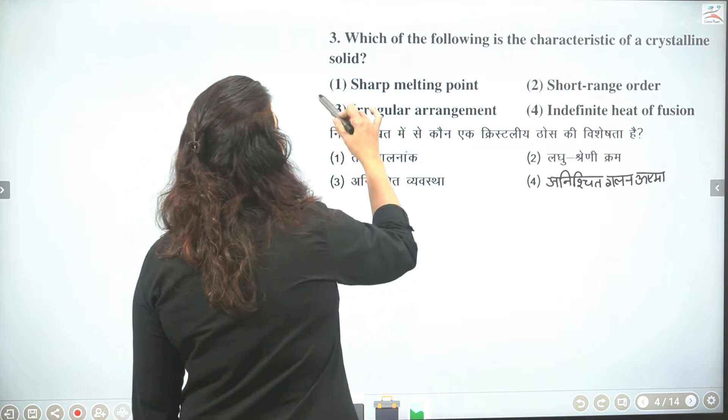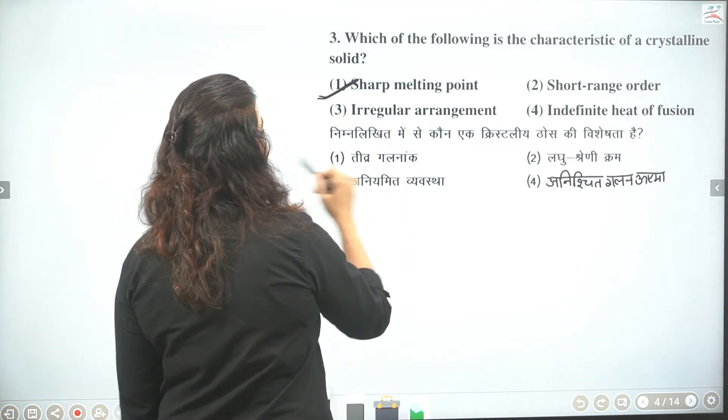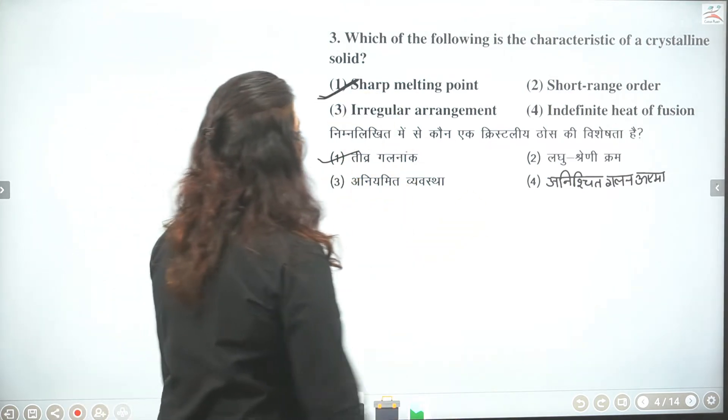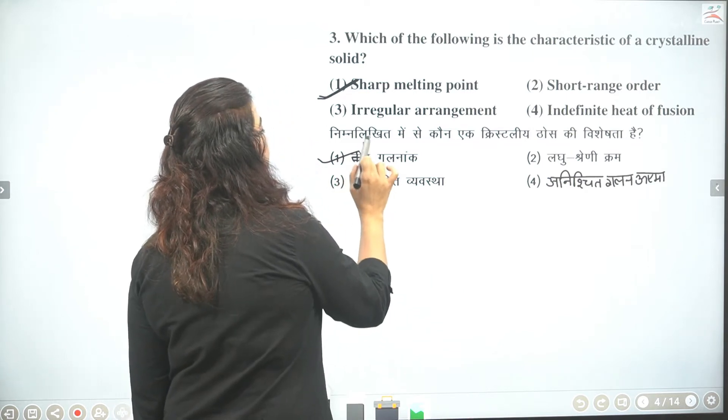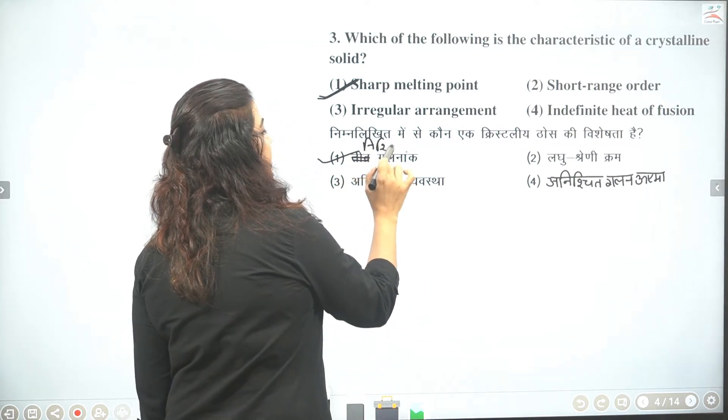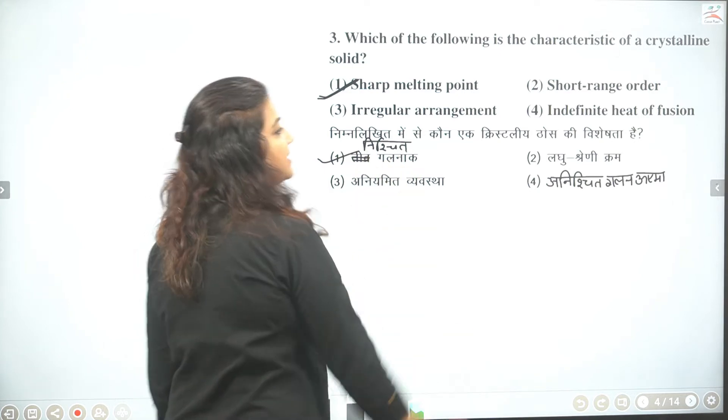So we have to say that heat of fusion is fixed because melting point is fixed. Thik hai. So it is only one characteristic. Sharp melting point is the characteristic of crystalline solid.